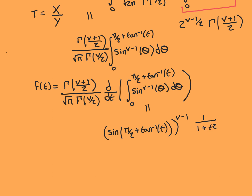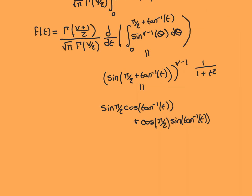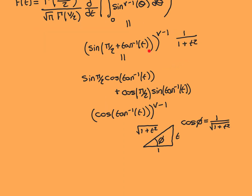So we don't need to worry about any problems here. We'll now apply the compound angle formula for sine to write this out. Applying the compound angle formula: sin(π/2 + arctan(t)) = sin(π/2)·cos(arctan(t)) + cos(π/2)·sin(arctan(t)). But cos(π/2) = 0, so that term vanishes, and sin(π/2) = 1. So all we actually end up with is cos(arctan(t)). Therefore sin^(ν−1)(π/2 + arctan(t)) simplifies to cos^(ν−1)(arctan(t)).